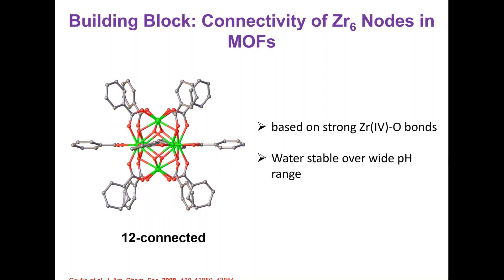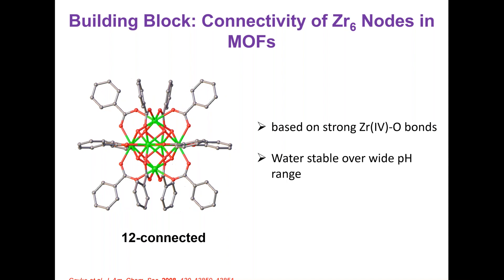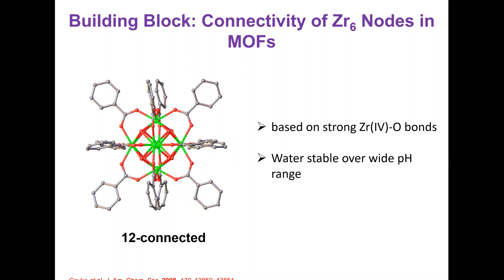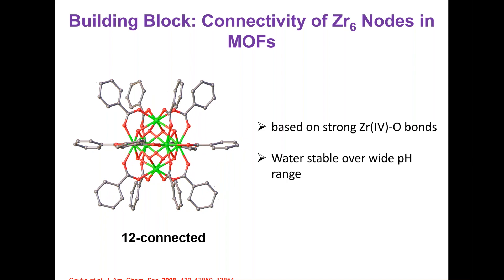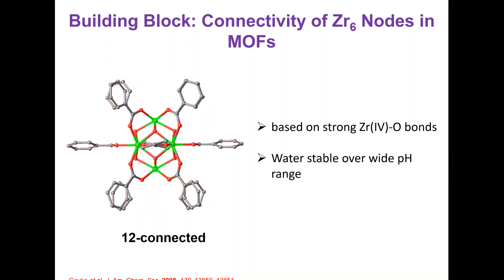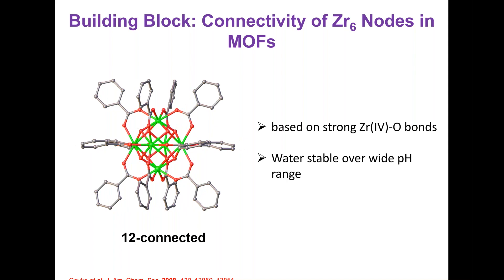What I'm showing you here is a 12-connected zirconium cluster — a Zr6 cluster, almost like a nano-zirconia, capped by 12 benzoic acids. Anytime I use the word 'connected,' that means the number of carboxylic acids around this 6-zirconium unit. If I go to lower connectivities — like 10, 8, or 6 — then for every missing carboxylic acid, it's going to be balanced by a water and a hydroxyl group.